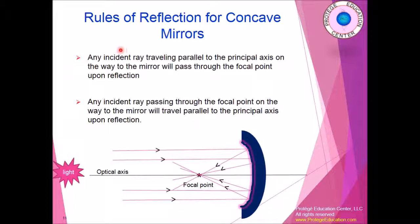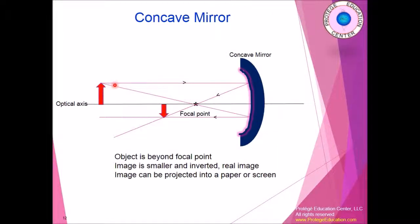The rule for a concave mirror is that any incident ray traveling parallel to the optical axis will pass through the focal point after reflection. Any incident ray passing through the focal point will reflect parallel to the optical axis. If you place an image away from the focal point and draw the reflected rays, they will intersect and form an image away from the focal point on the other side.